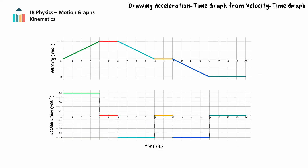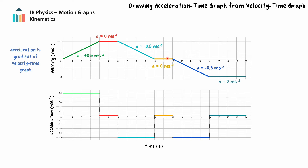Using the velocity-time graph we previously examined, we can develop an acceleration-time graph for the same motion. First, we can determine the acceleration from the gradient of the velocity-time graph. Where the gradient is positive, the acceleration is a horizontal line above the time axis. Where the gradient is negative, the acceleration is a horizontal line below the time axis. Where the gradient is 0, the acceleration is 0.